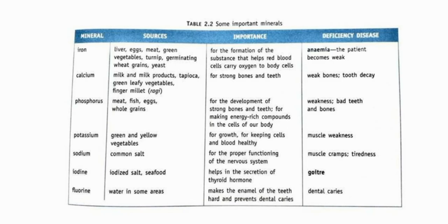Next is phosphorus. Sources are meat, fish, eggs, and whole grains. Phosphorus is important for the development of strong bones and teeth, and for making energy-rich compounds in the cells of our body. Deficiency may cause weakness, and bad teeth and bones.